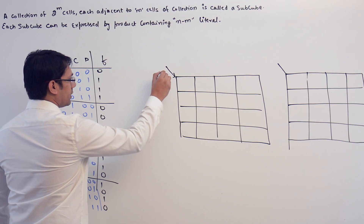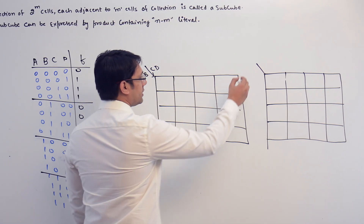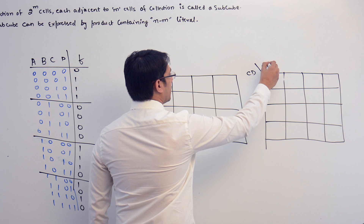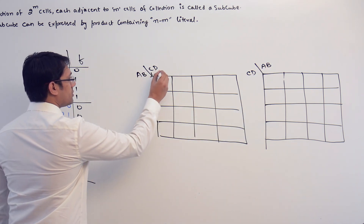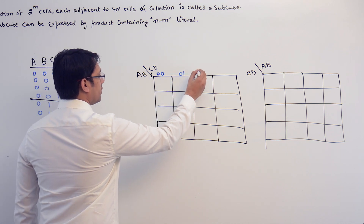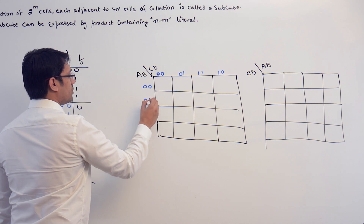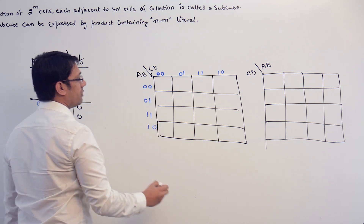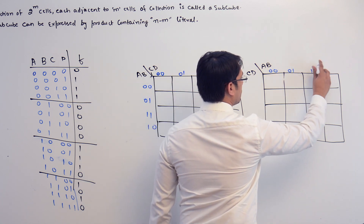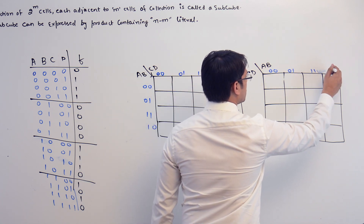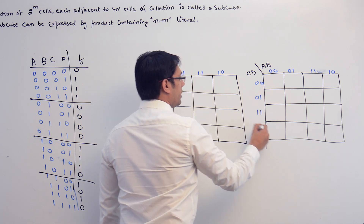If I represent AB here and CD here, the combinations along each axis follow Gray code order: 00, 01, 11, 10. The same ordering applies for both axes on both K-maps.